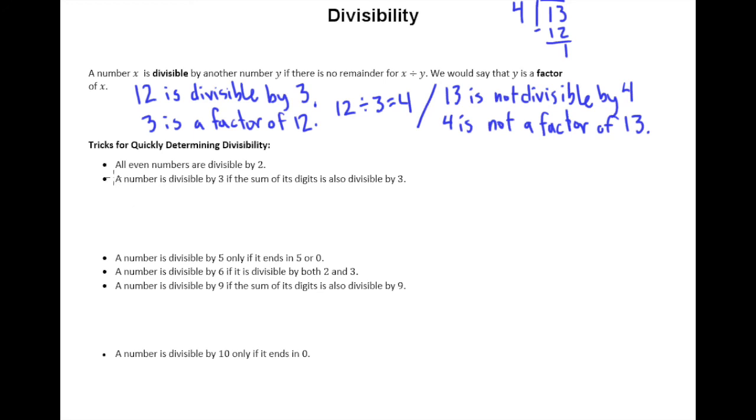So let's start with 2. The quick check for if a number is divisible by 2 or not is just determine whether it's even. All even numbers are divisible by 2. All odd numbers are not.